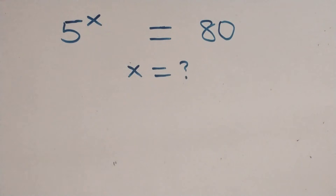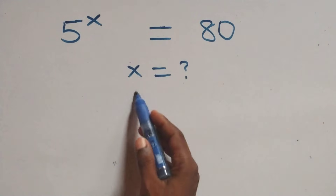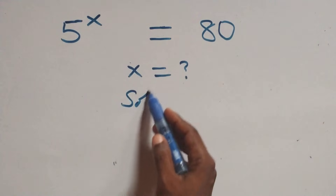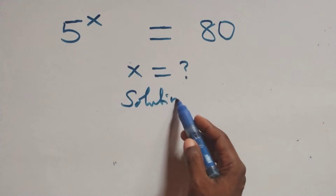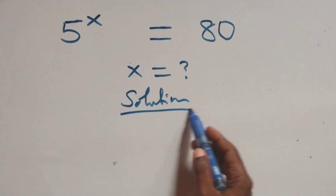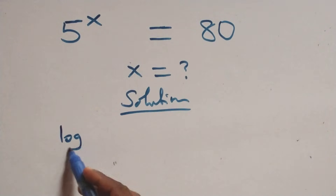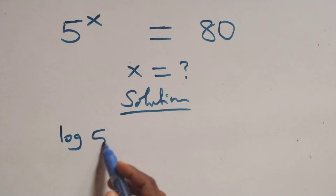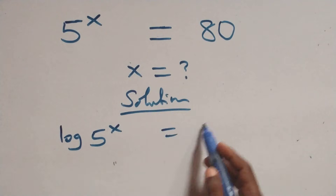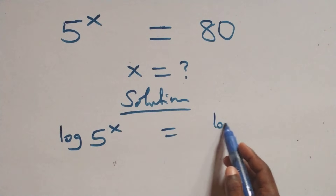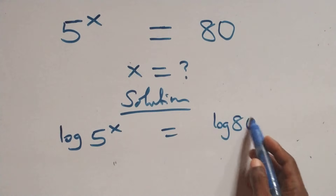Hello, you are welcome. How to solve this equation — a nice explanation of the solution from here. And what we have here, we take the log on both sides. That is, we have log of 5 raised to power x equals to log 80 on this side.